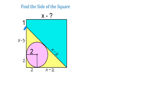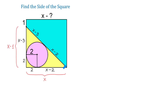And if this is x minus 3, then this is also x minus 3. Now in the yellow right triangle, the bottom side is x. The left side is x minus 1, because x minus 3 plus 2 is x minus 1. And the hypotenuse is 2x minus 5, because x minus 3 plus x minus 2 makes 2x minus 5.